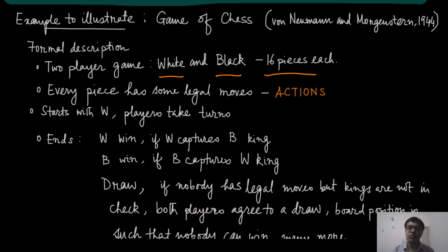And it will end in one of the three outcomes. Either it will be a win for the white, in which case the white captures the king of the black. Or it can be a black win, in which case the black will capture the white king. Or it can be a draw, in that case nobody has any legal moves, but kings are not in check. Draw can happen in multiple ways. So both players, if they agree to draw, then it also ends in a draw. And there are several other ways.